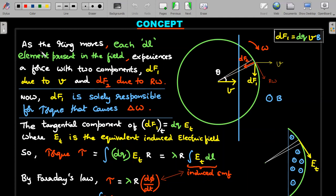My argument here would be this omega development only happens due to this df₁ and but not due to df₂ because it passes through the center and hence provides no torque. So let's read through whatever I said in a formal manner. As the ring moves, each dl element present in the field - dl is this small arc here - experiences a force with two components: df₁ in this direction due to the v velocity and df₂ due to the r omega speed. Now df₁ is solely responsible for the torque that causes the change in this omega.